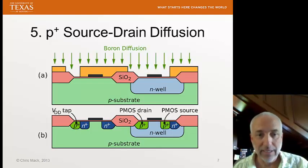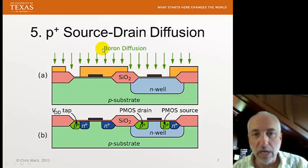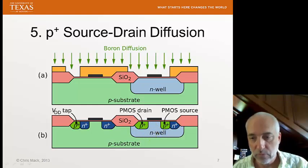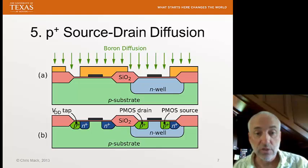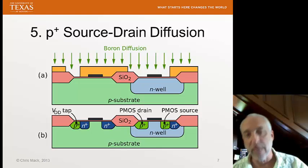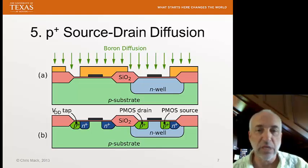We then cover up the N-channel device and open up a region where our P-channel device is going to be made, and we apply a P-type dopant — boron in this case — to create the source and drain inside of the N-well. Now we've got the source, drain, and gate all made up for both types of devices: the P-channel in the N-well and the N-channel in the P-substrate.